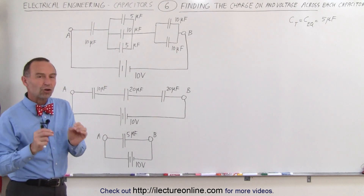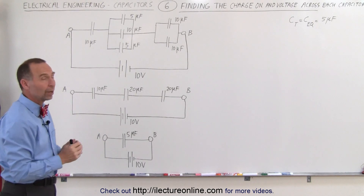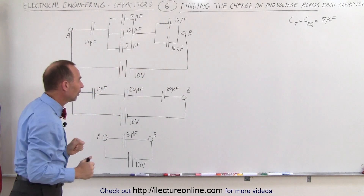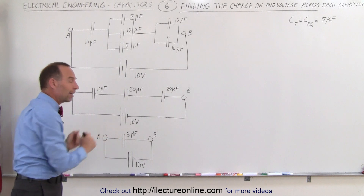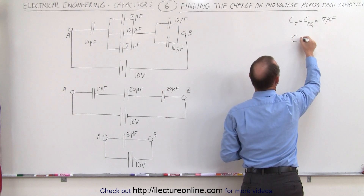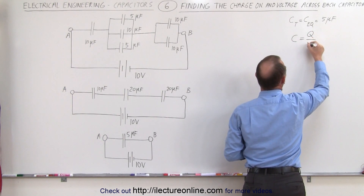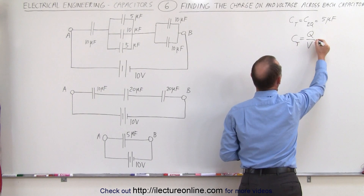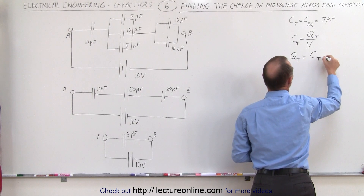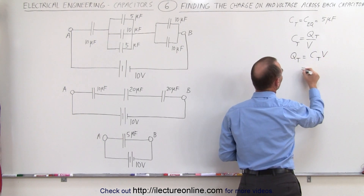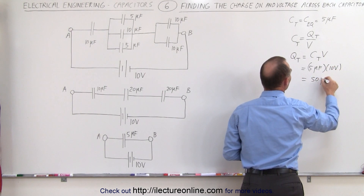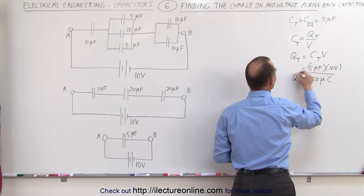So how do we find the charge on each capacitor and the voltage across each capacitor? Starting with a 10-volt battery across our circuit, we first use the equation: capacitance equals charge divided by voltage. Taking the total capacitance times the total voltage, the total charge Q_total equals 5 microfarads times 10 volts, which is 50 microcoulombs.